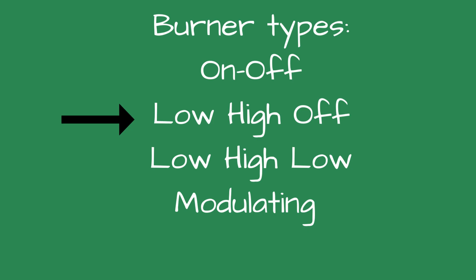Low-high-low: this burner starts at low fire and travels to high fire until the steam pressure gets close to the set point of the low-high-low pressure control. It is considered a two-position burner, as it will either be in low or high fire and not between. I prefer this burner firing method as Honeywell contends it is more efficient than modulating and requires less maintenance. Advantages: less boiler cycling, reduced ignition noise, better efficiency, and more consistent steam pressure. Disadvantage: more expensive than on-off or low-high-off burners.